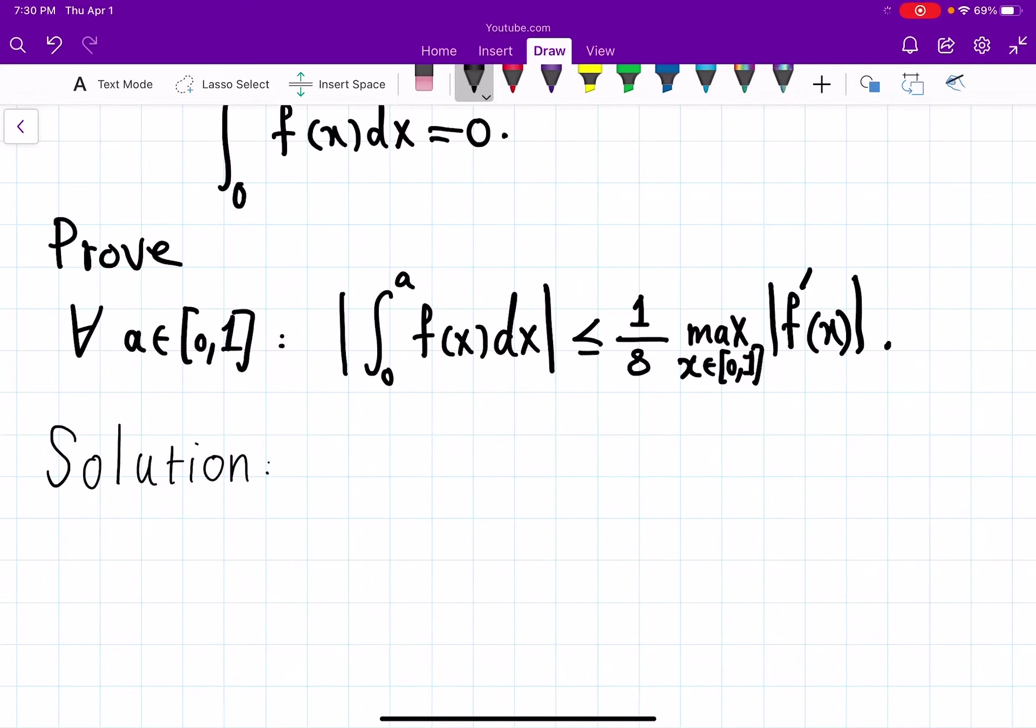So the first observation, which is very effective, is indeed that both sides of the inequality that I want are scaled the same way. So if I multiply f by 10, both sides are multiplied by 10.